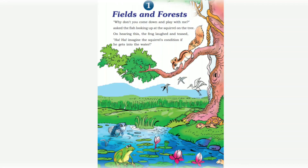This is the first chapter, Fields and Forest. You see a picture on the first page — there is a conversation between some organisms in an environment. The fish asked the squirrel, 'Why don't you come down and play with me?' On hearing this, the frog laughed and teased, 'Imagine the squirrel's condition if he gets into the water!' The squirrel replied, 'Can you climb a tree and jump along its branches like I do?'